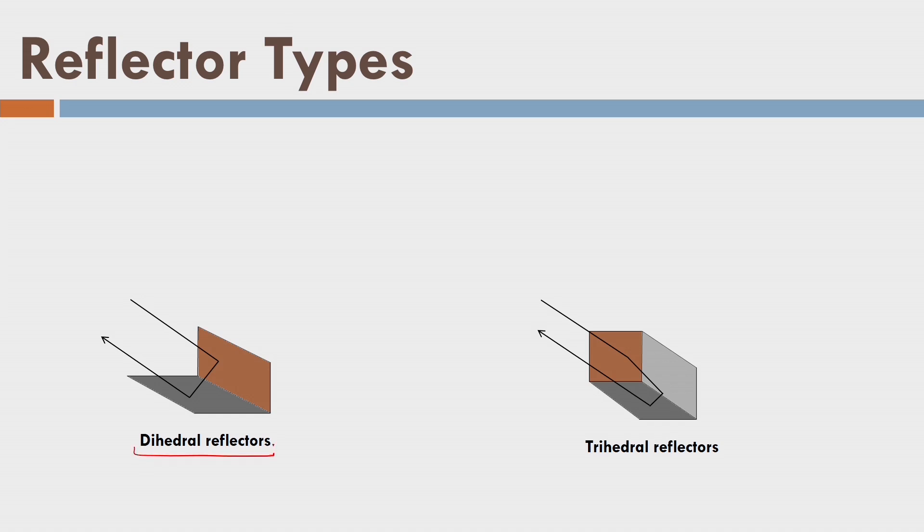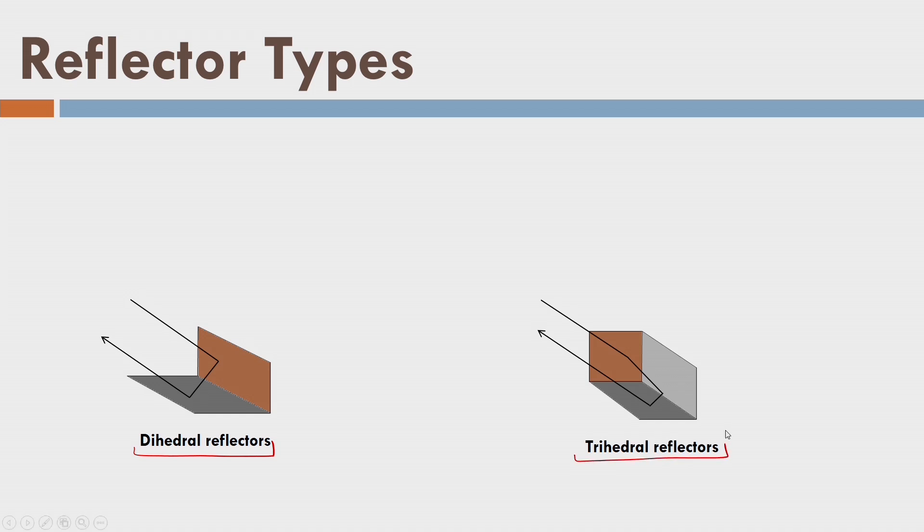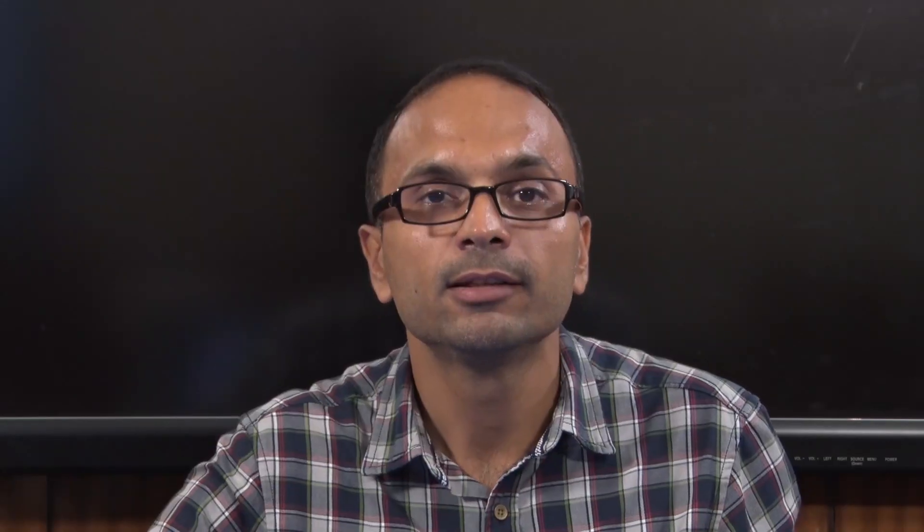Let us talk about types of reflectors. We have two types. First, the dihedral reflector: the transmitted pulse hits a surface, reflects, and returns toward the receiver via two reflections. Second, the trihedral reflector: imagine a cube — the transmitted pulse hits one surface, then a second surface, then the horizontal surface — three reflections — and returns toward the receiver. Such reflectors are called trihedral reflectors. With this we conclude the lecture on the geometric aspects of the radar system. Thank you very much.